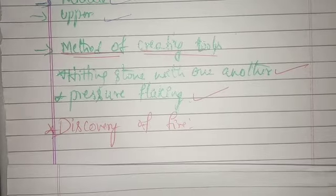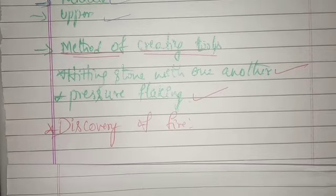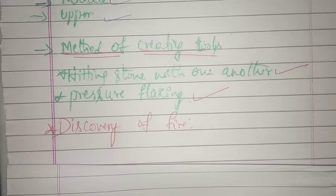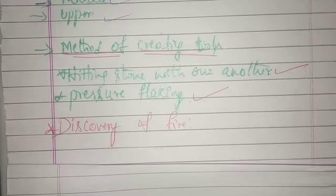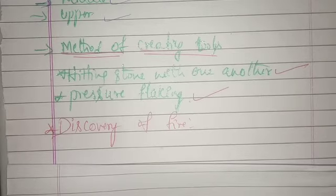The method of creating stone tools was very crude. The raw material was raw stone. One method of creating stone tools was hitting one stone with another stone until it took the desired shape. So hitting one stone with another stone until it gets the desired shape is called the first method of creating tools.